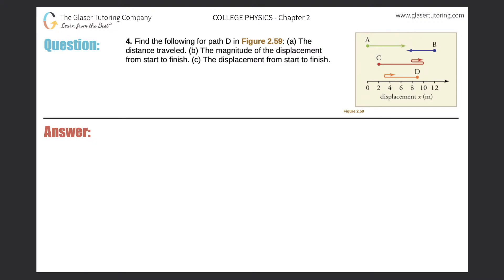Number four: find the following for path D in Figure 2.59 - the distance traveled. Alright, so letter A, let's write that down here. Let's go to the graph, let's go to path D. Here it is.